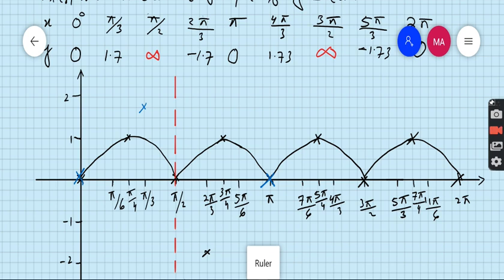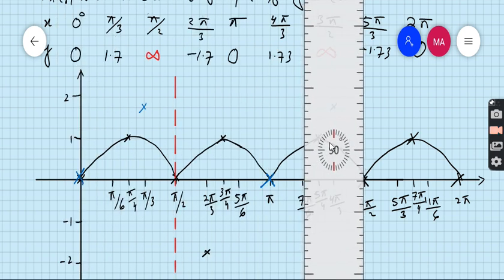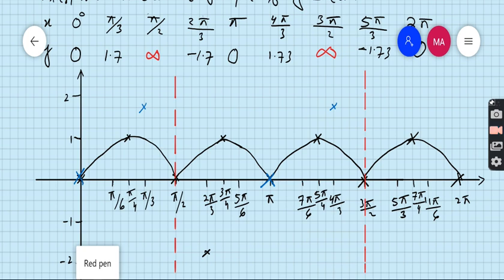4 pi by 3, 1.73. For 3 pi by 2 there is an asymptote. Here we go. So this is the asymptote. For 5 pi by 3 the value is minus 1.73, so 1, 2, 3, 4, minus 1, 1, 2, 3. This is minus 1.73 and for 2 pi, the value is 0. Now join all the points, first point, second point.